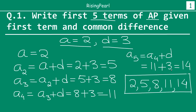So one very quick point I would like to make, friends: as you go on to find out subsequent terms, you notice that we take the last term and we add the common difference. So it's very important not to make mistakes, because if you would have made a mistake in finding out A₂, the second term,